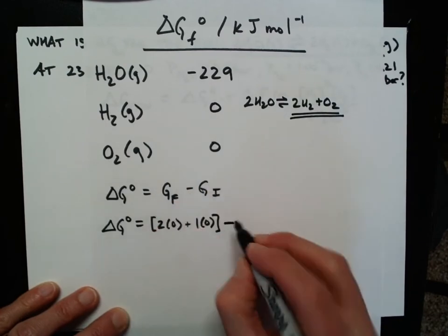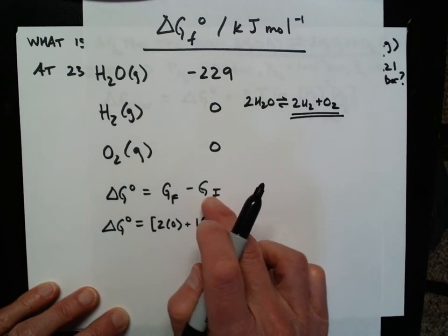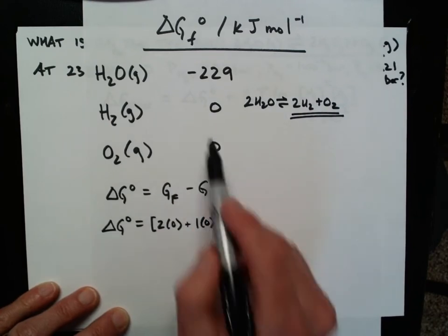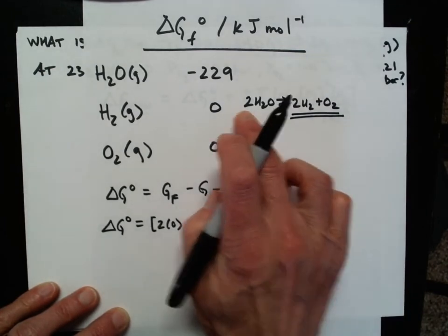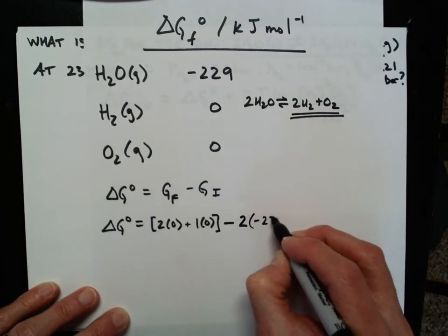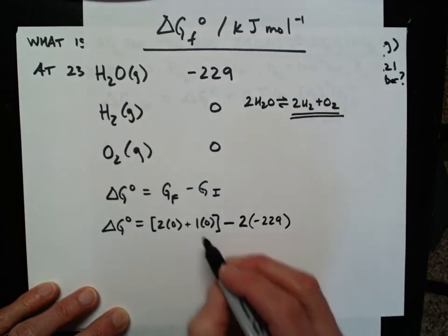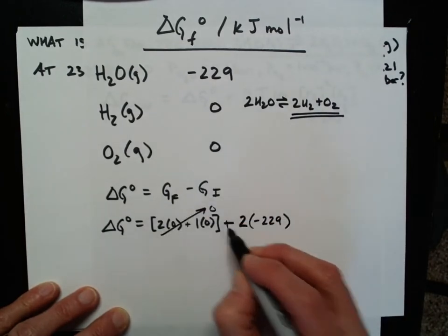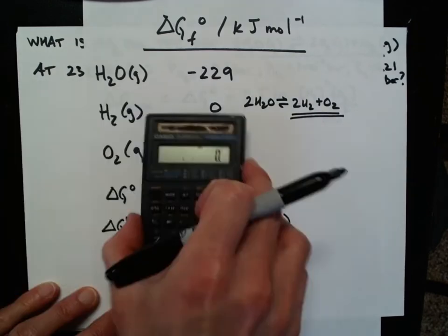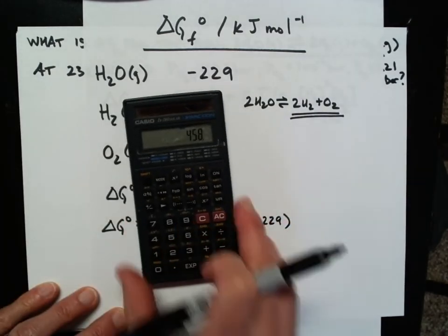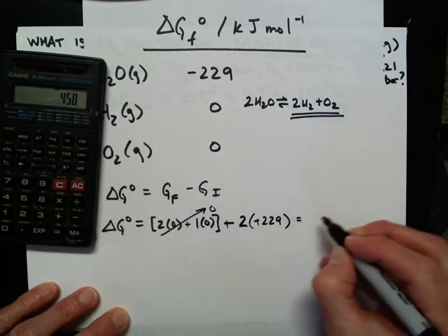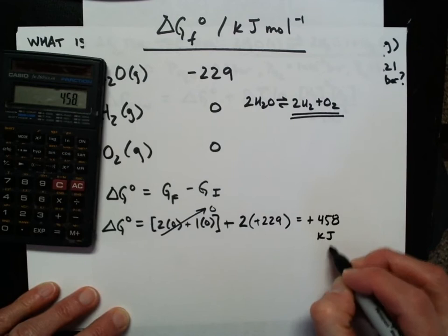Now I want to subtract from that the Gibbs free energy for the initial conditions, free energy of formation. So I've got to subtract twice the value for water, minus 229. Let's see, this all goes to 0, and I'm going to add twice the 229. 2 times 229. So that's going to be a positive 458 kilojoules per mole.